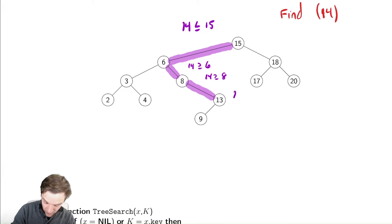I then get that 14 is greater than or equal to 13, so I go to the right. Oops, didn't find it. That means 14 is not in the binary search tree. There is no other place it could have been in this tree.